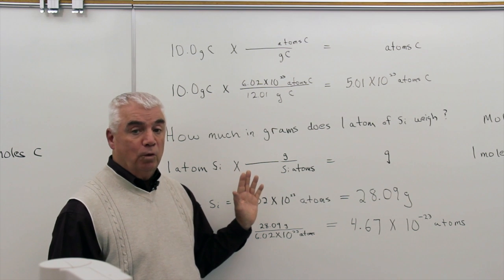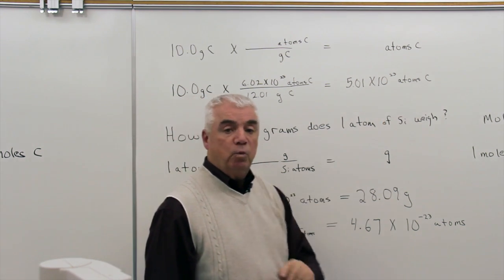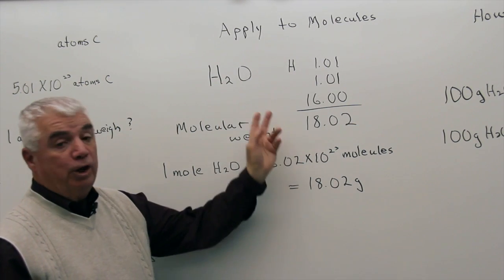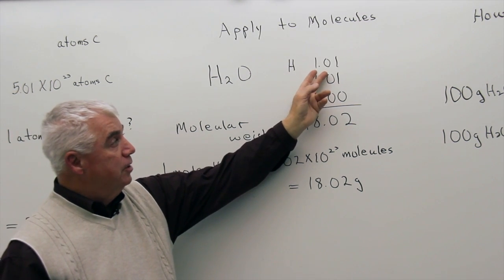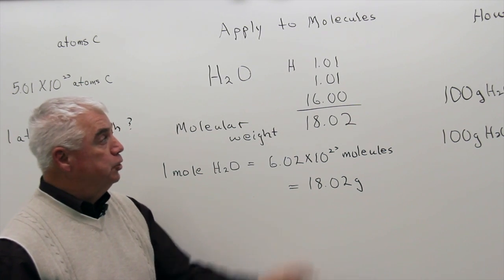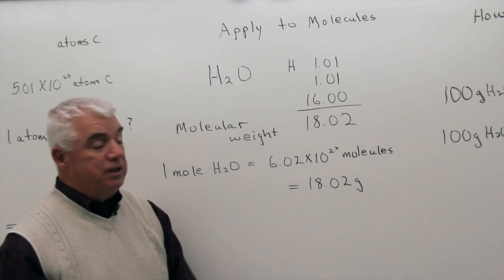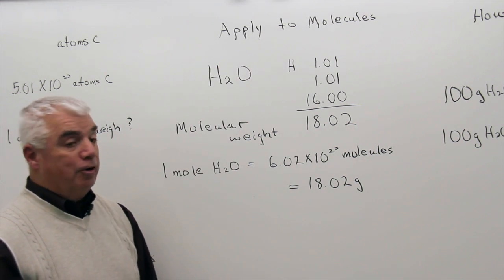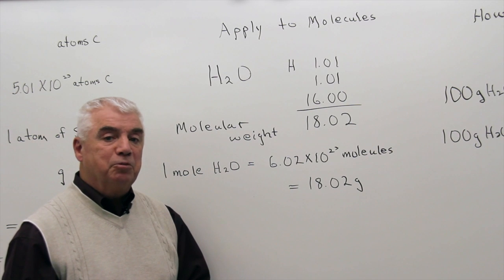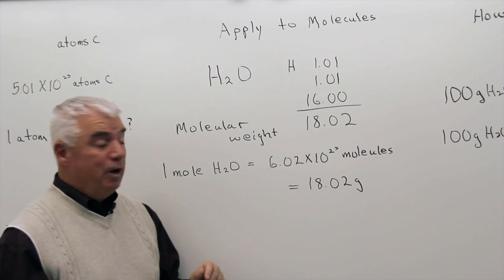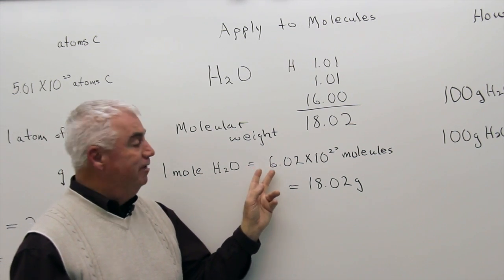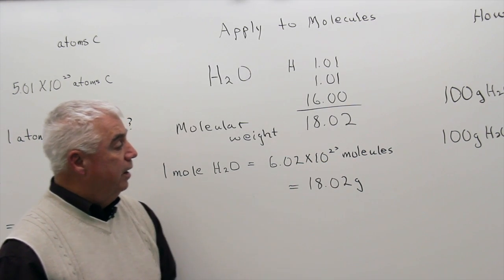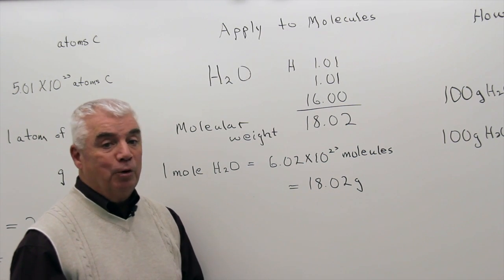Let's apply this concept now to molecules. We've worked three problems with atoms; let's work a problem with molecules. A molecule of water has two hydrogen atoms and one oxygen atom. Using the periodic table, hydrogen has an atomic weight of 1.01 atomic mass units — there are two of them — and oxygen is 16.00, for a total of 18.02 atomic mass units. That's the molecular weight for a molecule of water. Just as we applied the mole concept to atoms of elements, we can apply it to molecules: one mole of water is 6.02 times 10 to the 23rd molecules of water, equal to the molecular weight in grams — 18.02 grams.